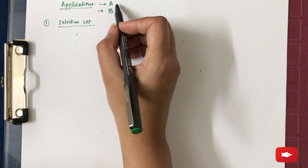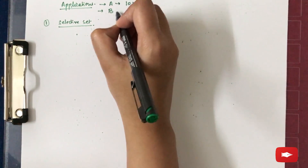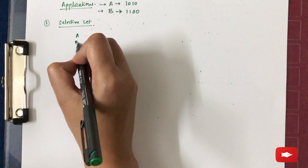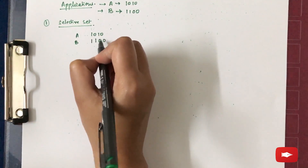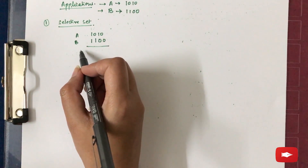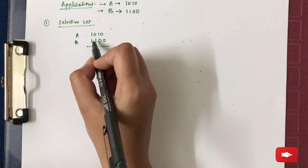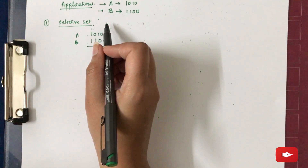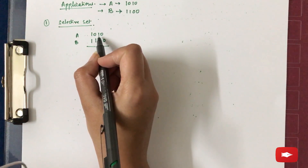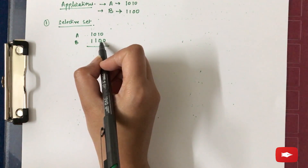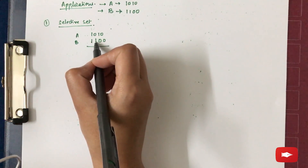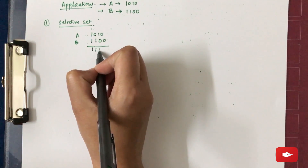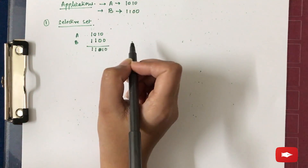For selective set, let us consider two registers A and B, where A has the contents 1010 and B has the contents 1100. According to the selective set application, whenever the value of a bit in register B is 1, the corresponding bit in register A will be set to 1. There will be no effect on bits in A if the value of the bit in B is 0.